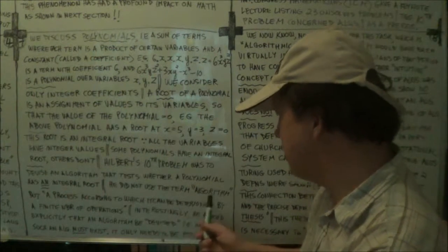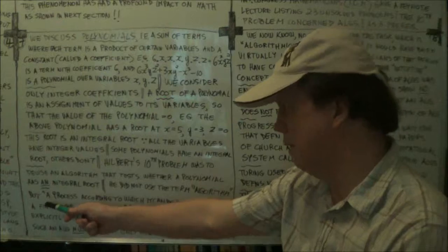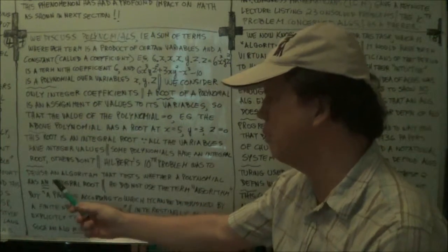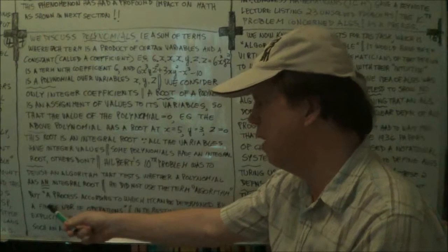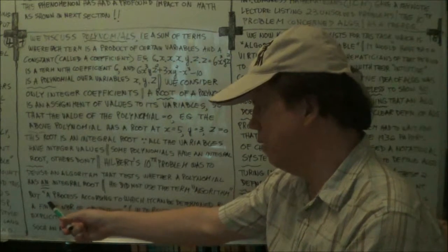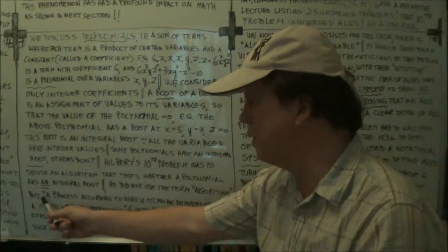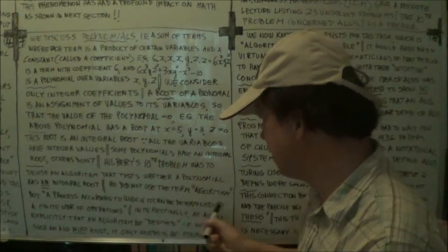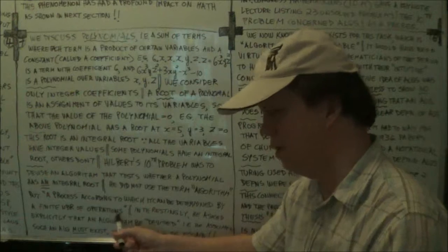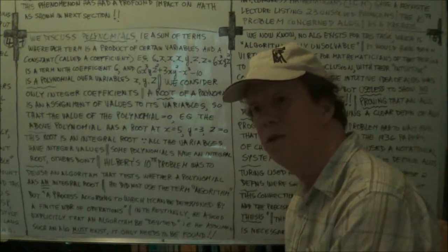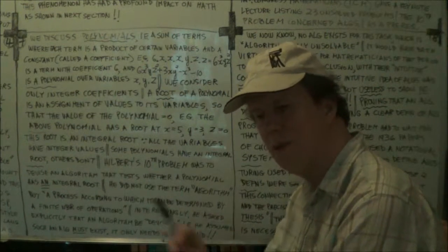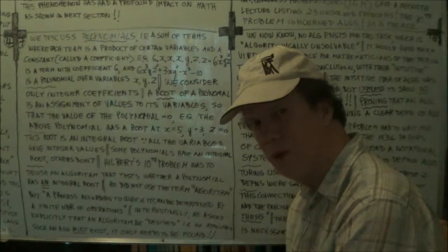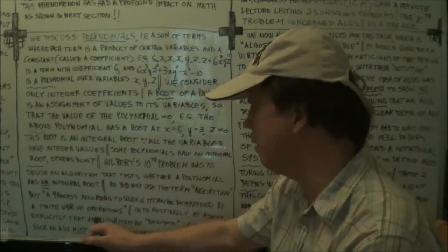Now, now he didn't use the term algorithm, this is what he didn't, this is a quote from Hilbert, so for him, instead of the word algorithm, he's using, instead of using an algorithm, you're using, quote, a process, according to which it can be determined by a finite number of operations. Well, that's the intuitive notion of what an algorithm is, you know, a step-by-step method of solving your problem. Right? So a finite, finite number of operations.